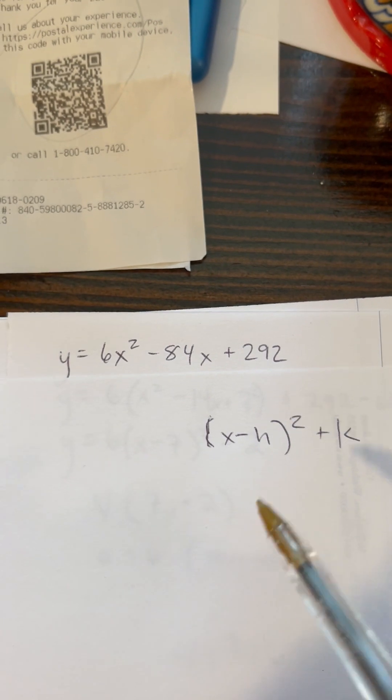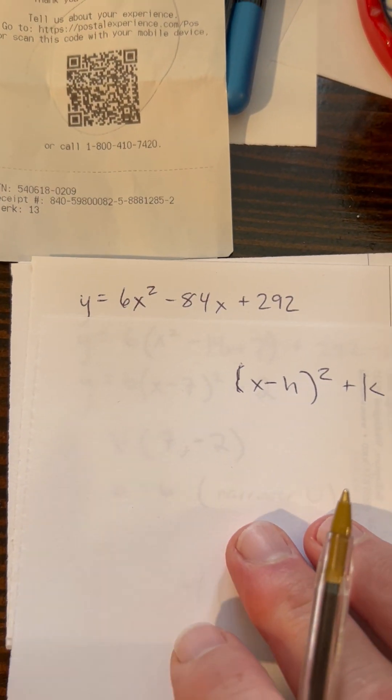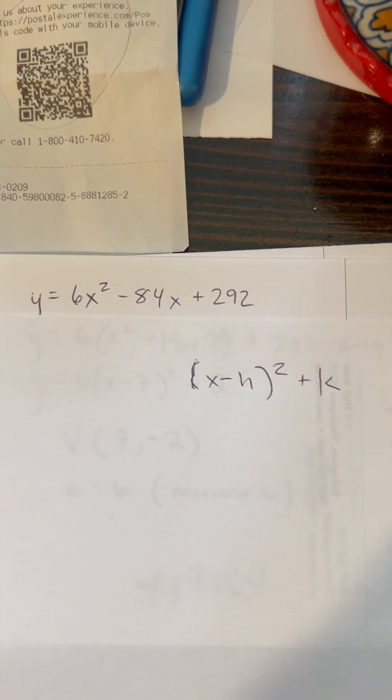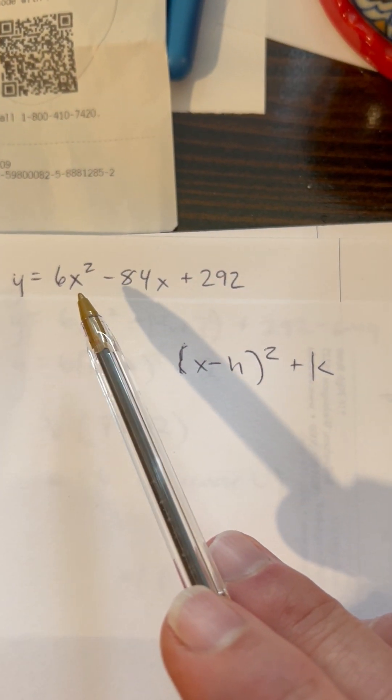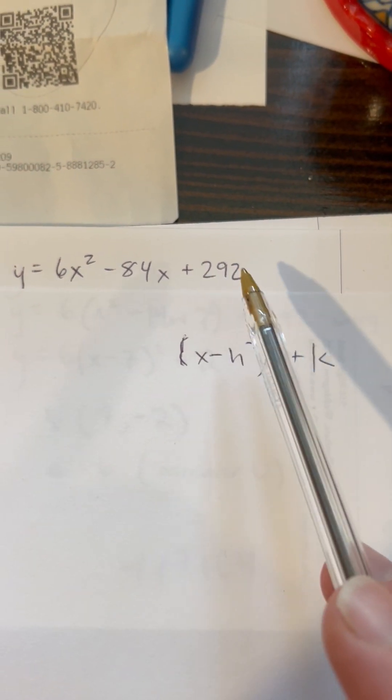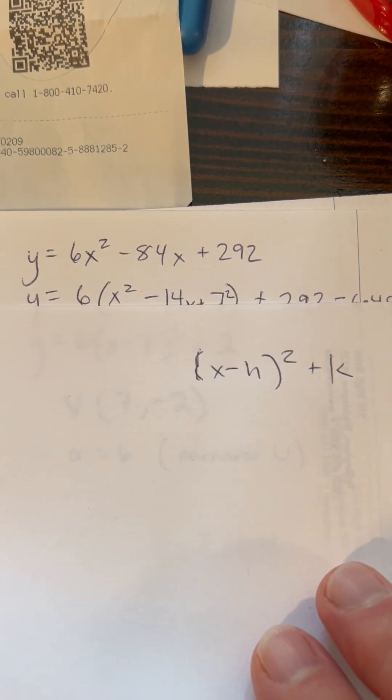So what I'm going to do first is pull out that 6 out of the first two terms. And as before, when we had 1 as our lead coefficient, I'm going to move the constant term out of the way over here. All right, so let's see the next step.